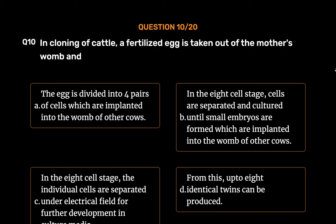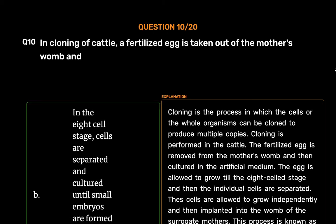The correct answer is Option B: In the eight-cell stage, cells are separated and cultured until small embryos are formed which are implanted into the womb of other cows.